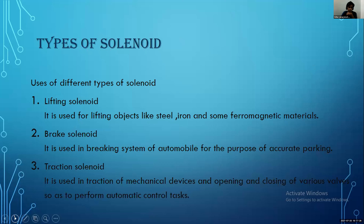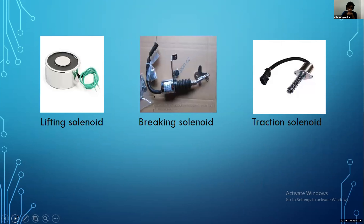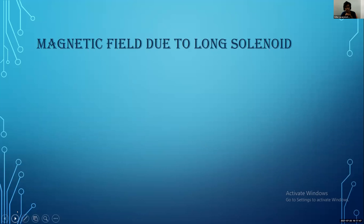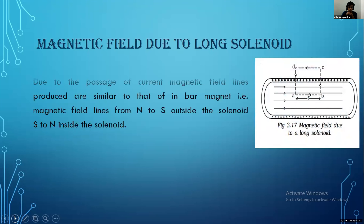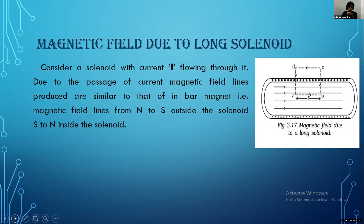The first type is the lifting solenoid, which is used for lifting objects like steel, iron, and some ferromagnetic materials. The second is the braking solenoid, used in the braking system of automobiles for accurate parking. The third is the traction solenoid, used in traction of mechanical devices and opening and closing of various valves to perform automatic control tasks. These are the images of these three types of solenoid.